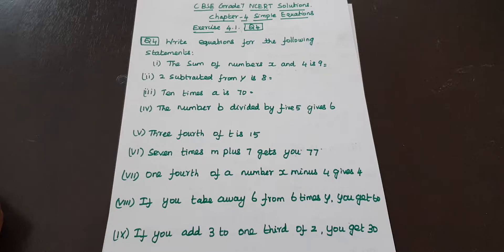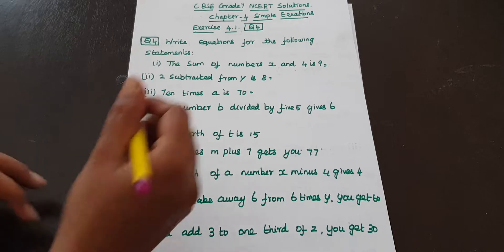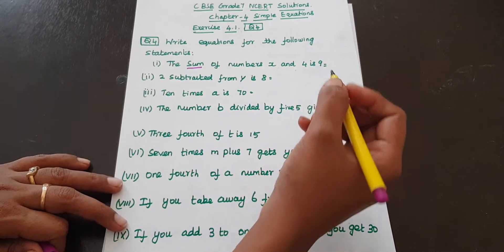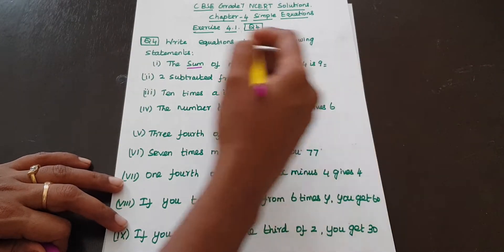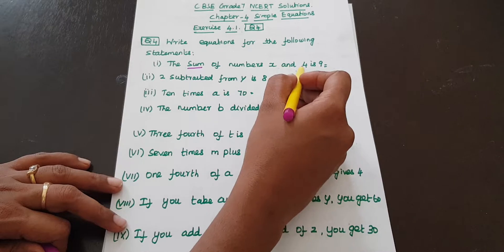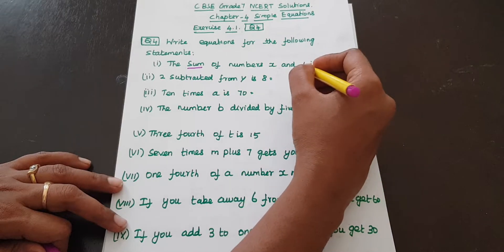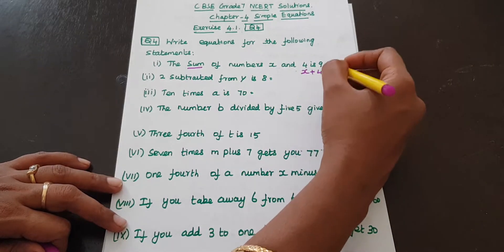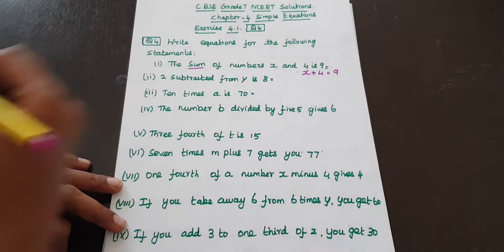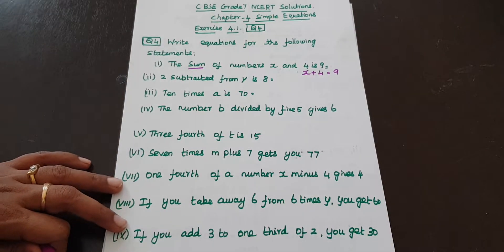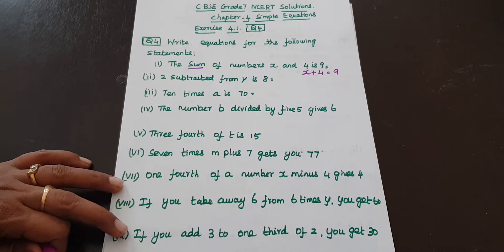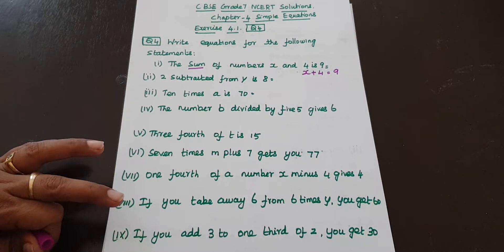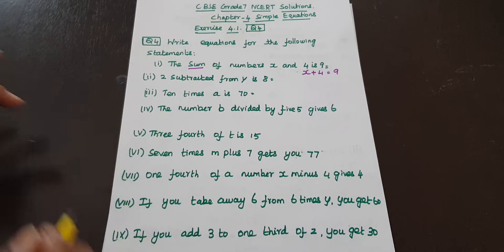We need to write statements as equations. The sum of — when we see 'sum of', that means addition. The sum of numbers x and 4 is 9, so x plus 4 is equal to 9. That is the equation we form from this statement.